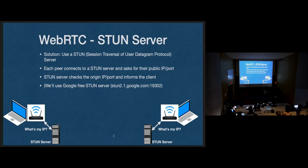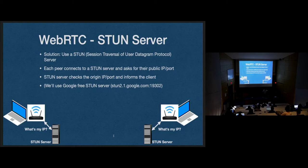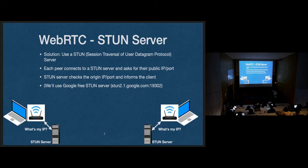We send a message to the STUN server, which is outside our local network. The STUN server responds with how you appear to the outside world — your IP address and port number. That tells us what the NAT assigned to us. If you look up your IP address on your laptop versus going to whatsmyipaddress.com, you'll get two different IP addresses — that's the difference between your public and private IP. The STUN server is basically a public IP address lookup. We're going to use one of Google's free public STUN servers, which is in the handout code.